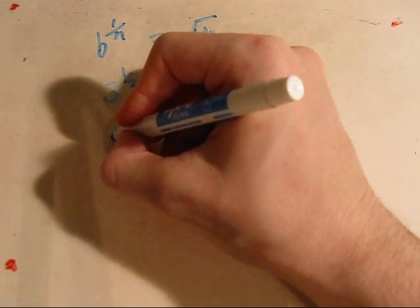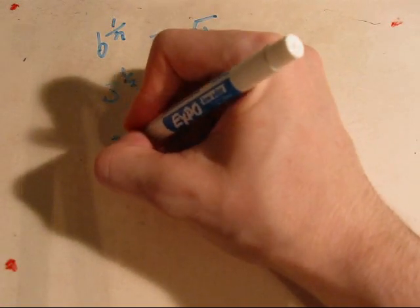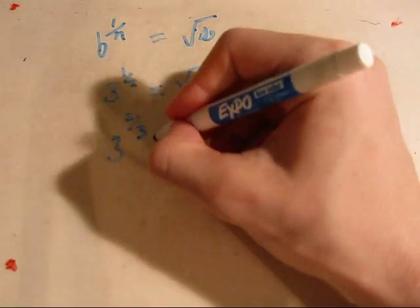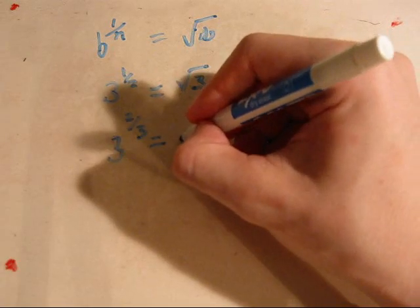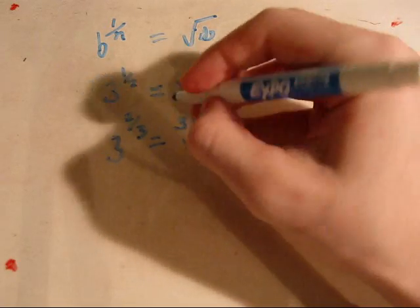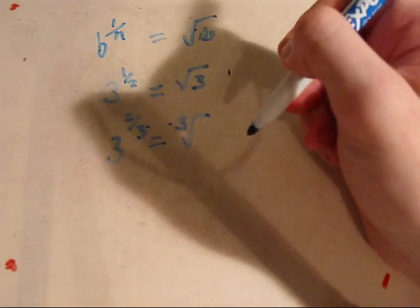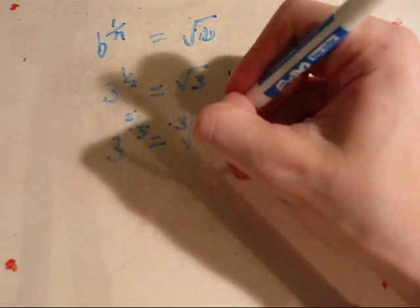And if you have a number like 3 and put it to the 2 thirds power, it's going to be equal to the cube root, the denominator which is the root, of 3.